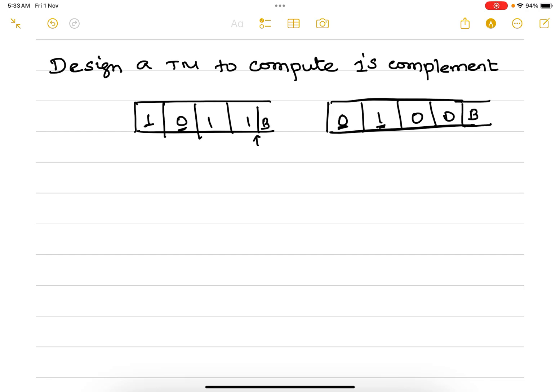Initially we are in one state, say q₀. From this state, when you have a one, you replace that with zero and move towards right. If you have a zero, replace that with one and move towards right.